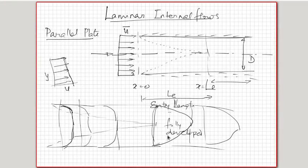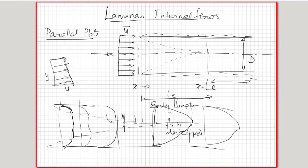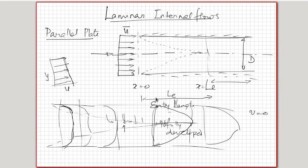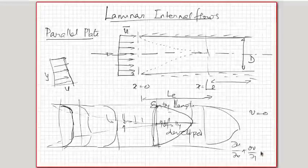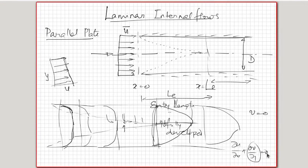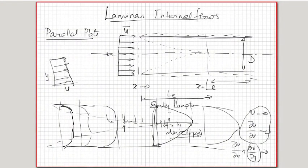After the boundary layers meet, there is no further cross-stream migration of the fluid. The v-velocity becomes zero. The boundary layers displace some fluid into the core during development, but after meeting, there is no y-velocity in either direction. So v = 0 after the entry length. From the continuity equation, ∂u/∂x + ∂v/∂y = 0: since v = 0 throughout, ∂u/∂x also becomes 0. These two conditions characterize the fully developed region.